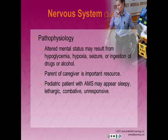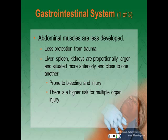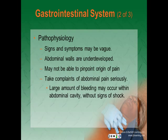Parents or caregivers are an important source of information during history taking. A pediatric patient with altered mental status may appear sleepy, lethargic, combative, or even unresponsive to tactile stimuli. Be diligent about assessing and managing the airway, remembering that their larger tongues may cause obstruction. Abdominal muscles are less developed in pediatric patients, providing less protection from trauma. The liver, spleen, and kidneys are proportionally larger and situated more anteriorly, so they are prone to bleeding and injury. Because organs are closer together, there is a higher risk for multiple organ injury from minimal direct impact.